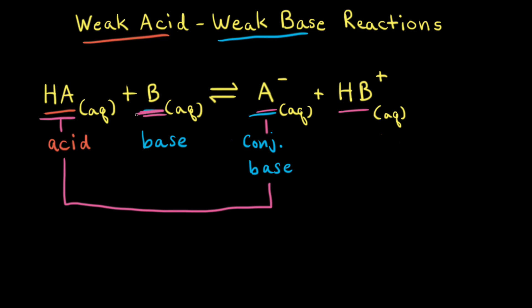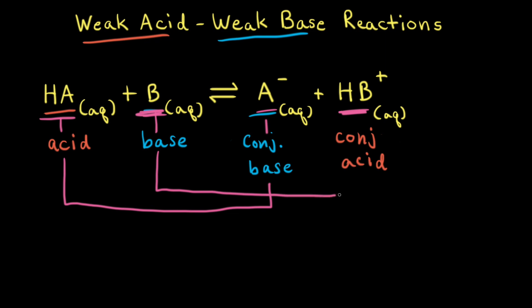When B accepts a proton, it turns into HB⁺. Therefore, HB⁺ must be the conjugate acid to B. Since there's one H⁺ difference between B and HB⁺, they are a conjugate acid-base pair.